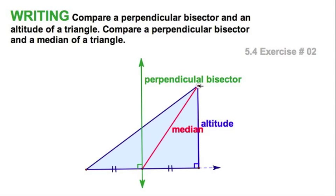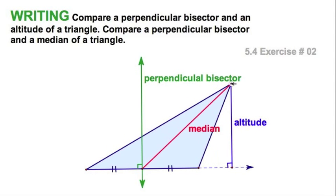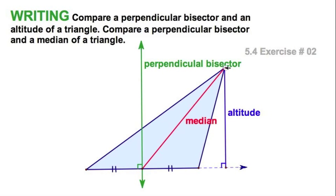And there you have the right triangle. Hmm, interesting. So remember, these are three different things. Perpendicular bisector, median, altitude.